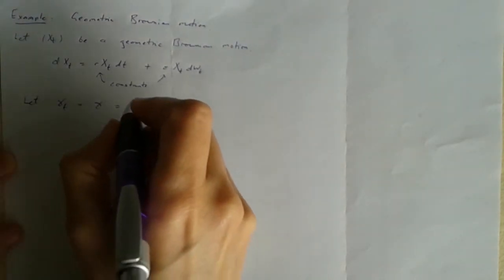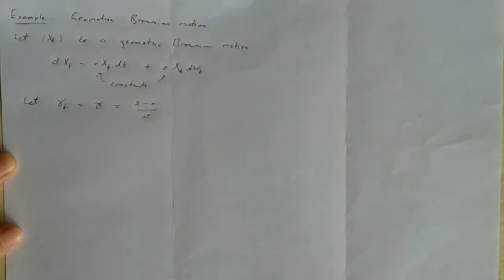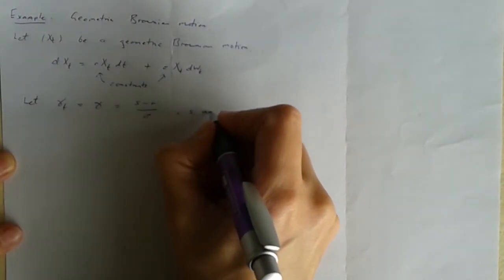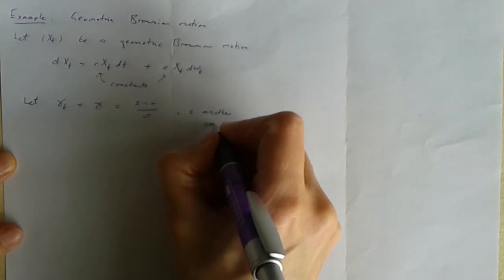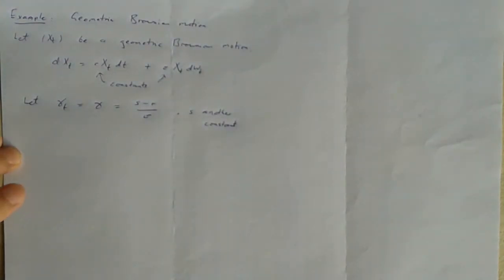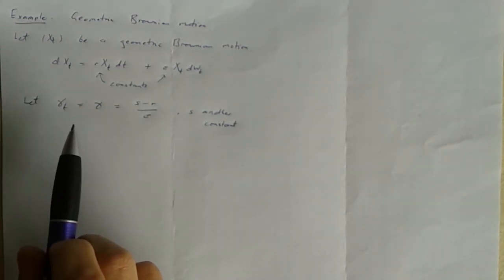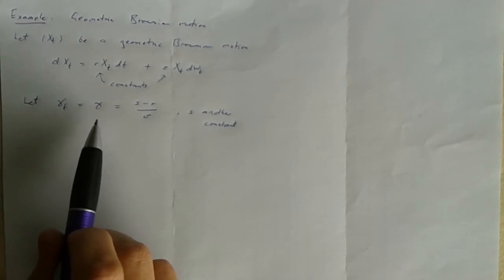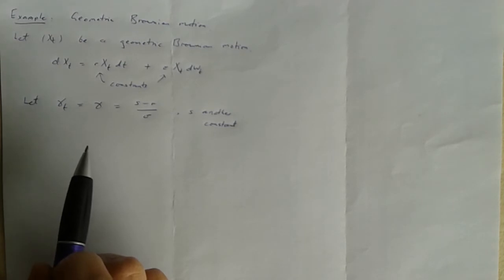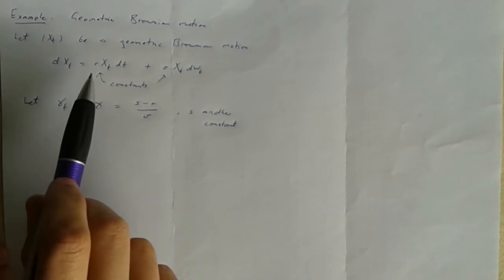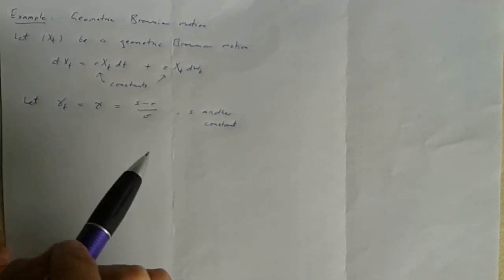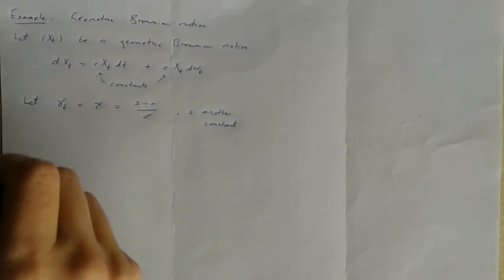So let's let gamma t, the gamma process in the change of measure, be this, just a constant. So s here is another constant. And so this whole thing is a constant. So the gamma t process actually doesn't depend on t in this example. It is just a constant which I'll therefore just call gamma. And what that's going to do, as we shall work it out, is essentially it will change the value of R to another value S.